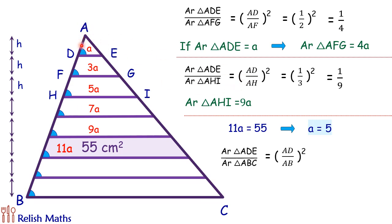That's (AD/AB)², which is (1/8)², and which is nothing but 1:64. So if the area of ADE is a, then the area of ABC will be 64a.